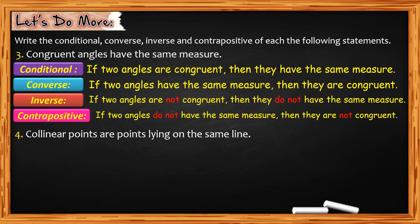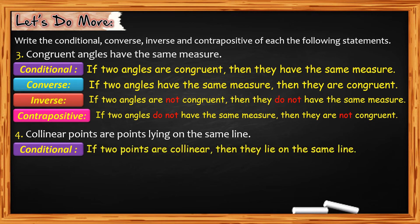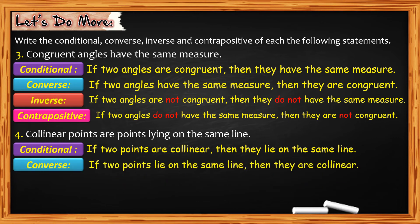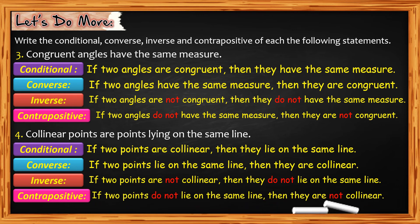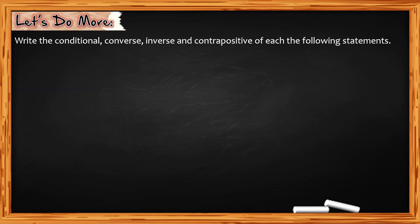For number 4: collinear points are points lying on the same line. For the conditional: if two points are collinear, then they lie on the same line. For the converse: if two points lie on the same line, then they are collinear. For the inverse: if two points are not collinear, then they do not lie on the same line. For the contrapositive: if two points do not lie on the same line, then they are not collinear.